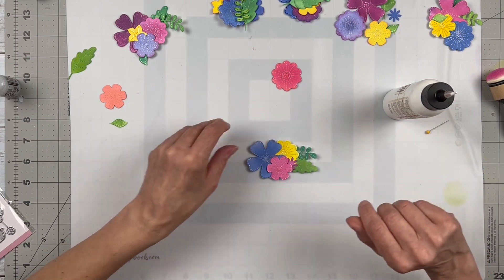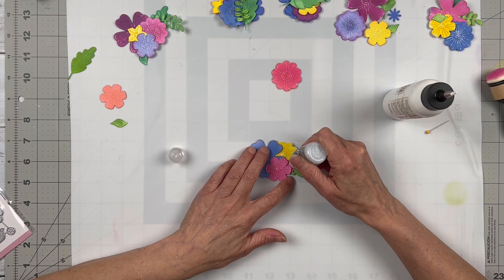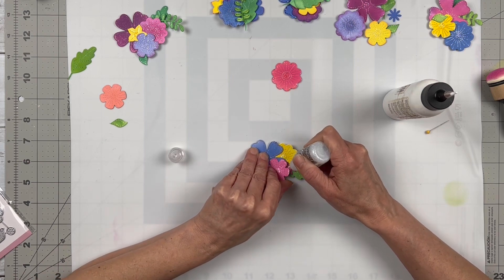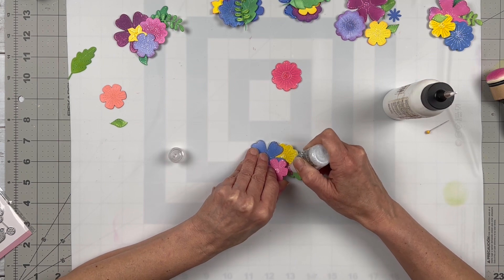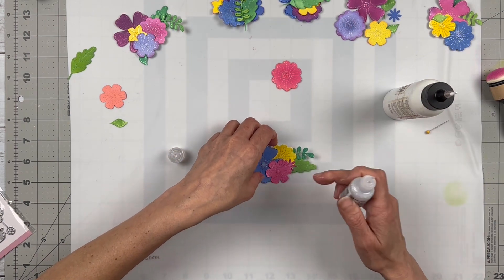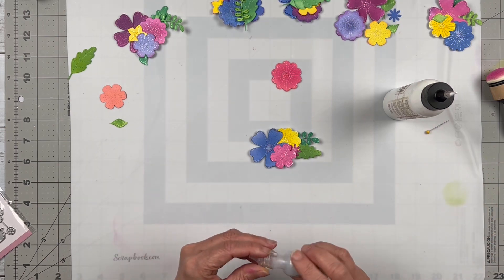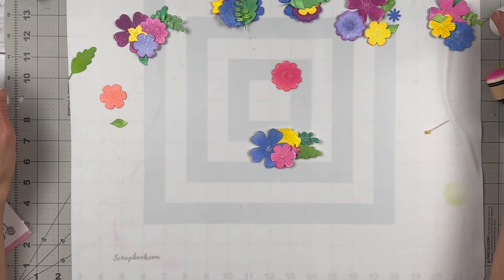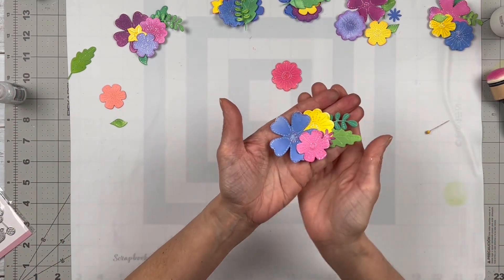I'm going to add a little bit of Stickles to the center of this flower. That will act as a little bit more glue. That is it. Okay, I'm going to leave that line. Stop adding stuff, Kelly, stop! Do you have to talk to yourself too?